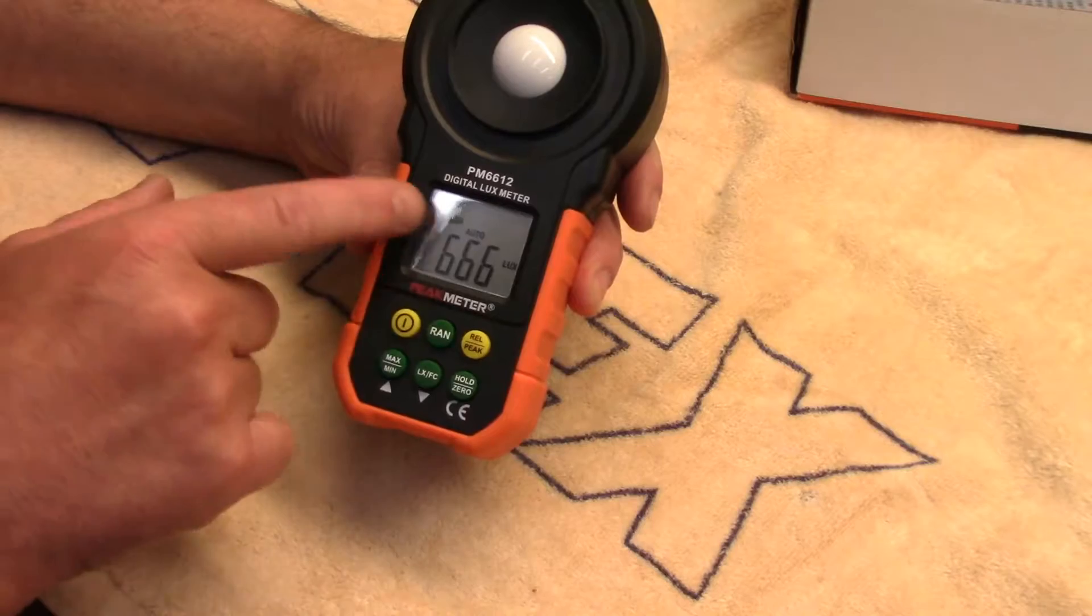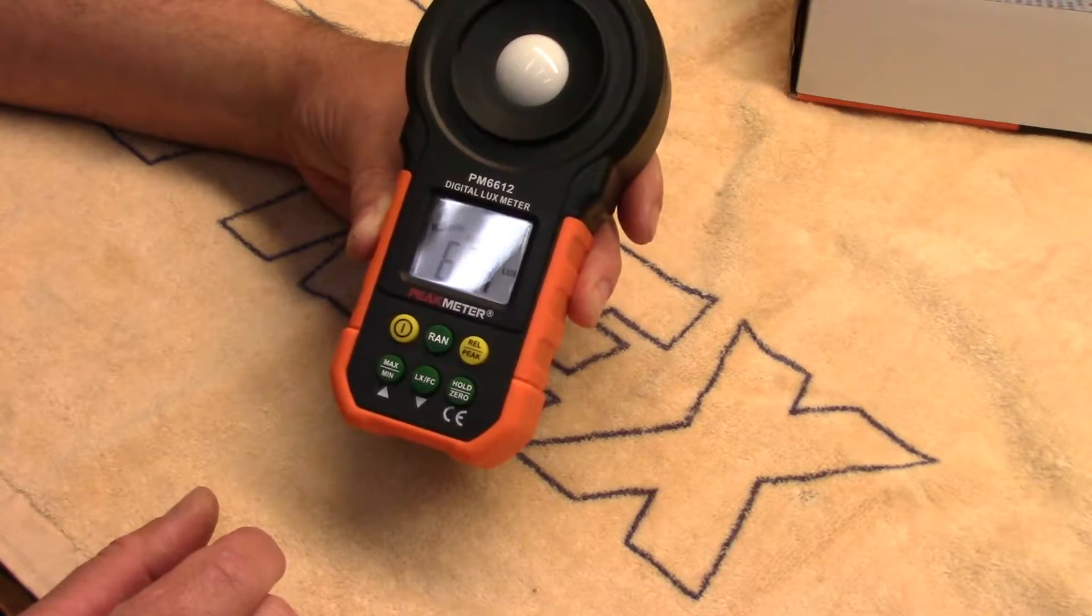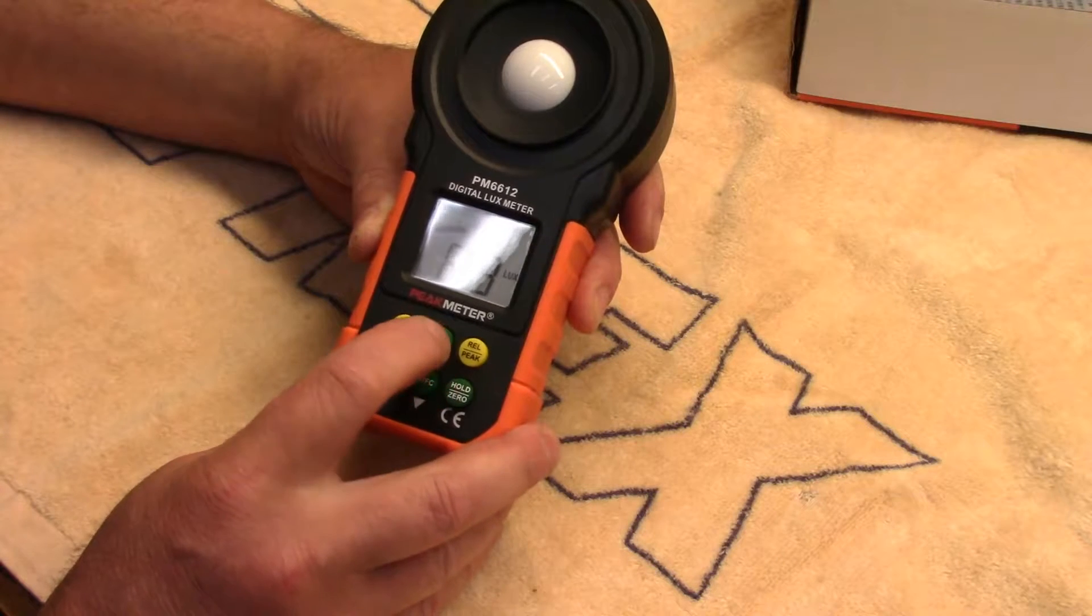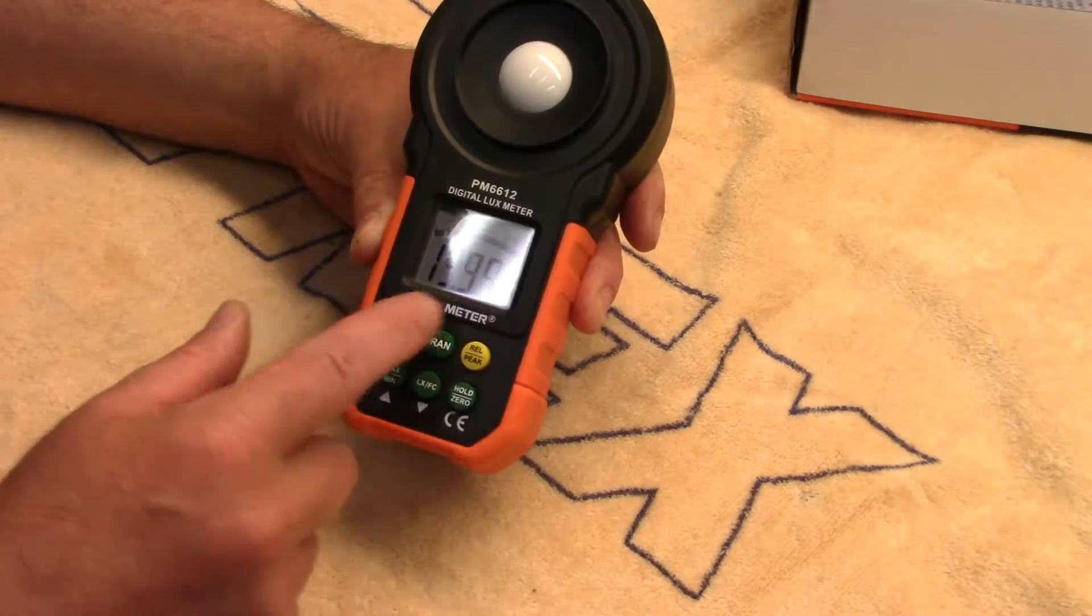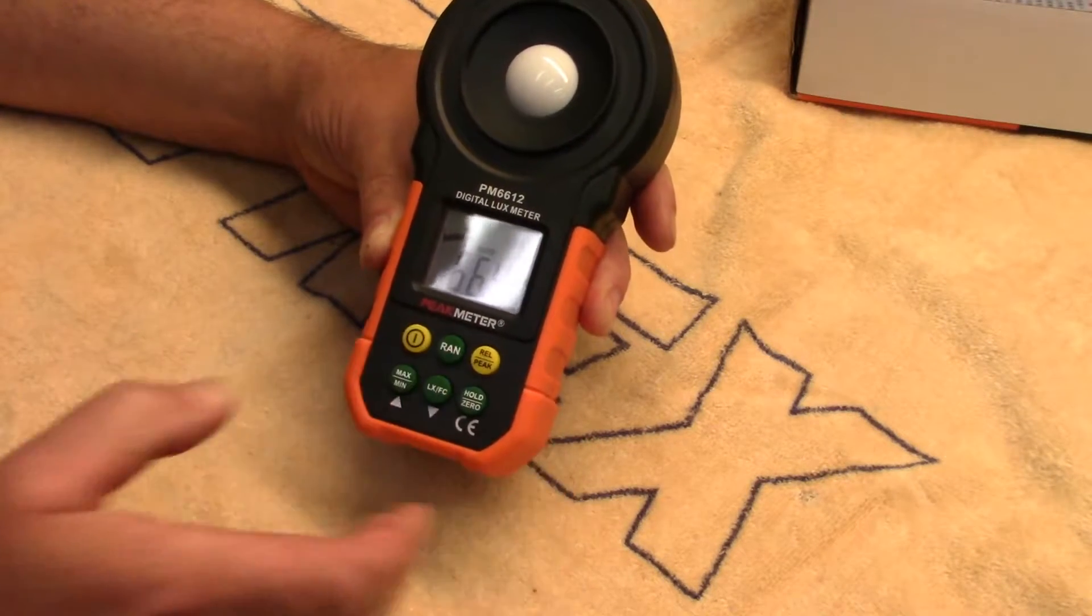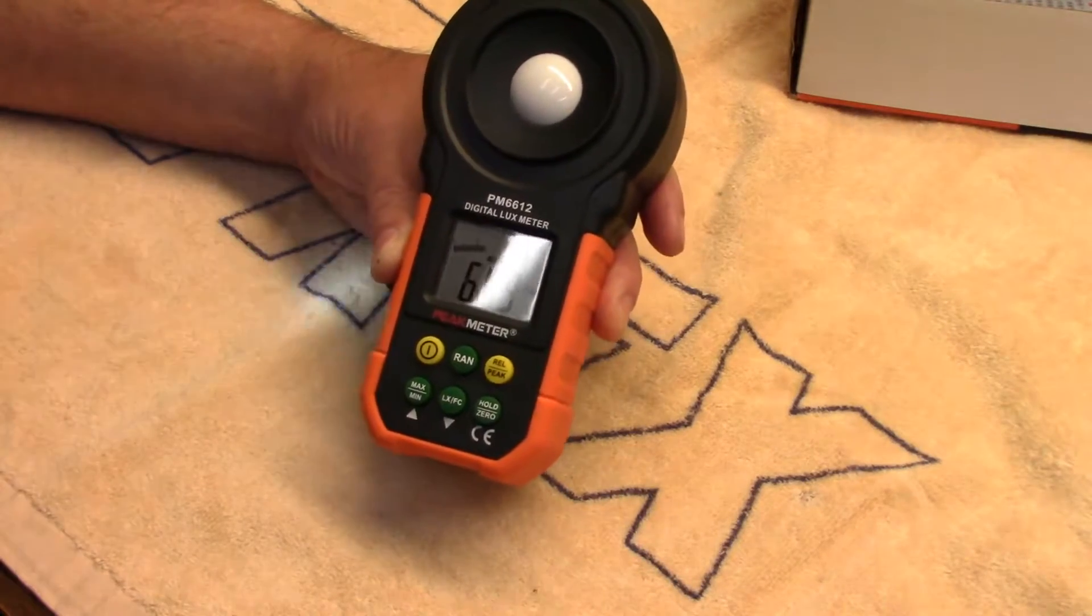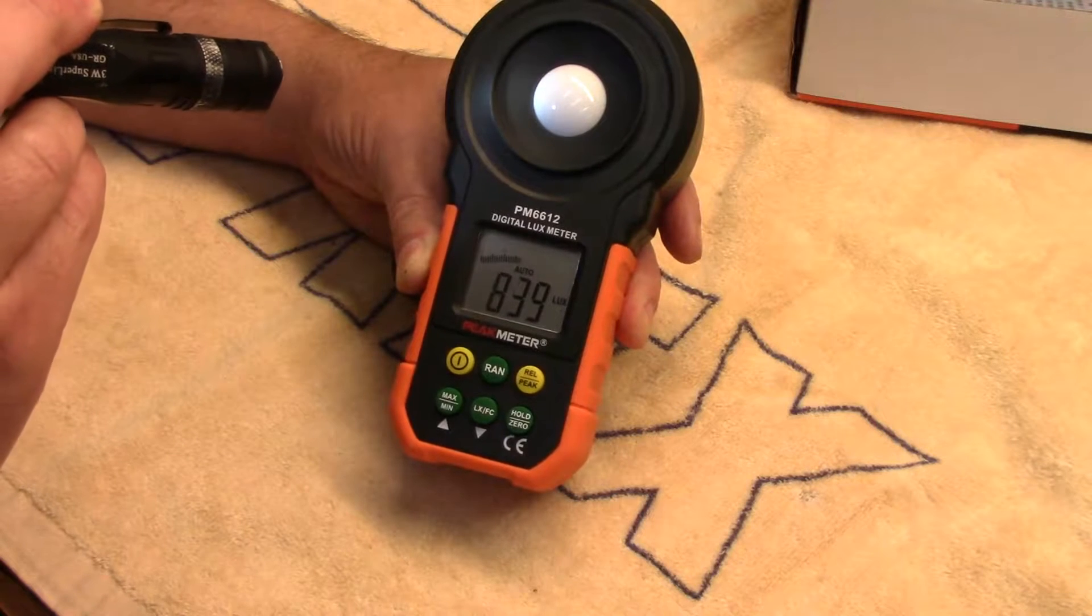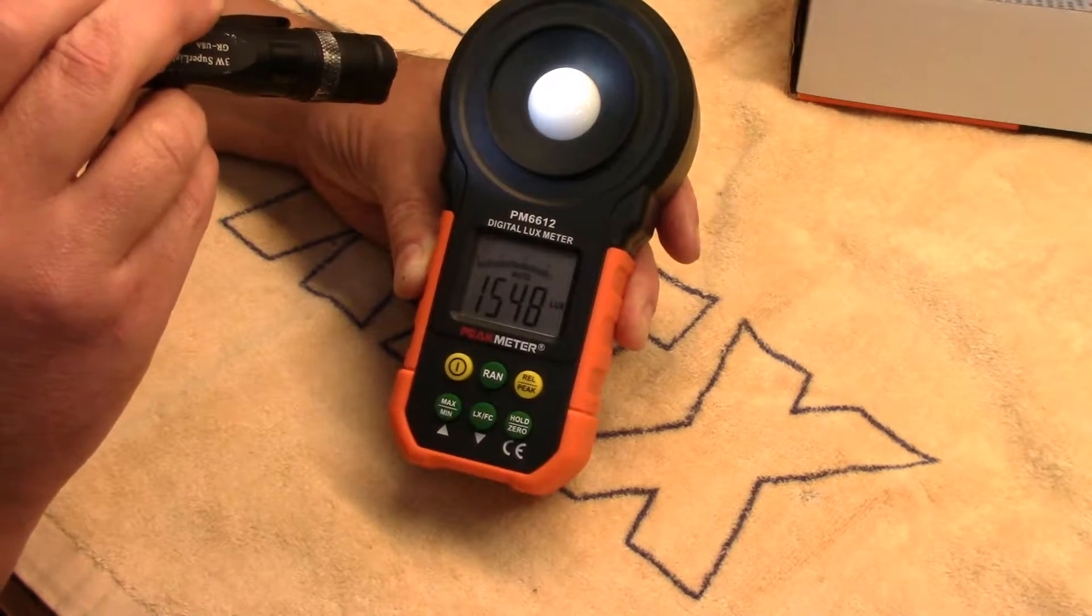It's got auto-ranging. When you turn it on it's automatically into auto-ranging, but you can turn that to manual ranging as well. You'll probably notice that it's a 2000 count. We'll go back to auto here, just hold it in to go back to auto. It's a 2000 count, meaning that once you get to 2000 it will drop a decimal place.